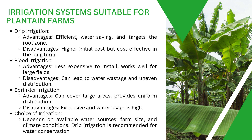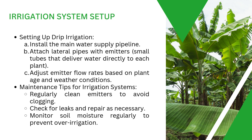To set up drip irrigation: get your main water source and attach your pipes. Adjust your flow rates based on plant age — when the plant needs water daily, set it accordingly; as plants grow older, reduce the flow. For maintenance, clean the emitters regularly to avoid clogging. Use clean water, check for leaks and repair them so water reaches the plants, and monitor your soil moisture to avoid over-irrigation.